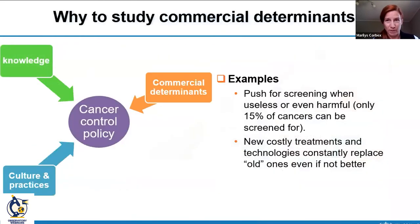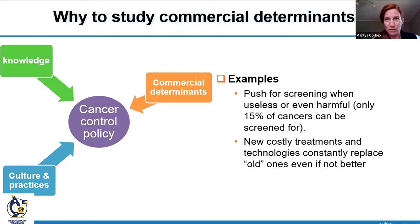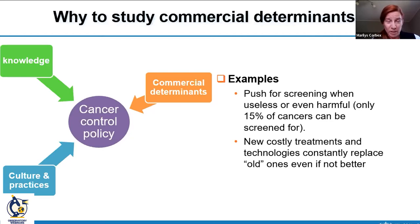Why is that? There are knowledge barriers — for example, if nobody in a ministry of health knows that taxes on sweet beverages efficiently decrease obesity, nobody will implement them. There are also cultural and practice barriers in changing complex health systems. But in many instances we found that the main barrier is that some actors very efficiently protect their financial interests. At the EU level, for instance, there is a very strong push for screening even when it's useless or harmful.